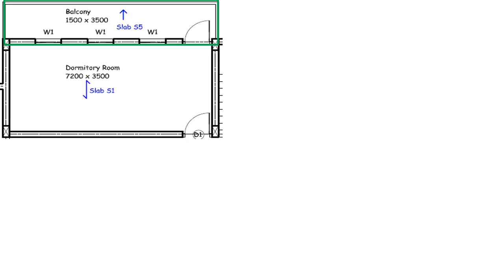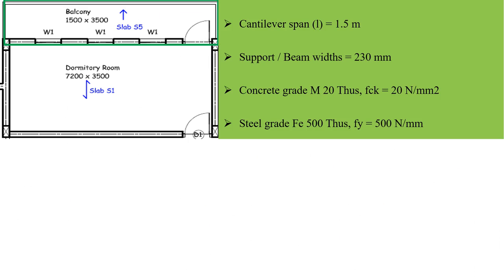We are first going to write down the basic information about the slab which we need to design. Having a cantilever span length equals to 1.5 meter, beam width equals to 230 mm, concrete grade equals to M20 and steel grade equals to FE 500.